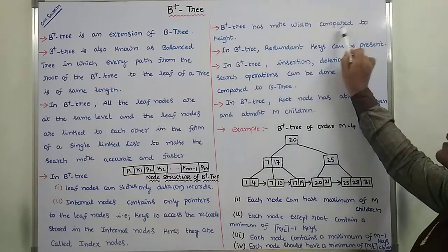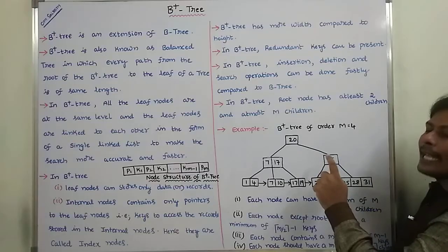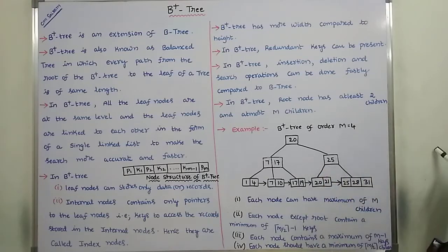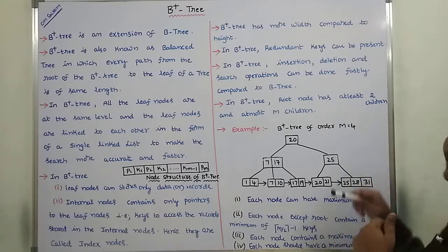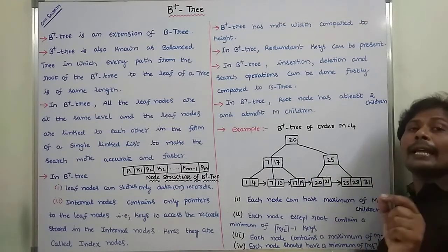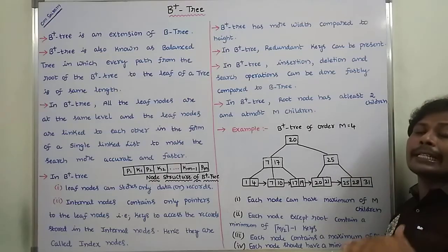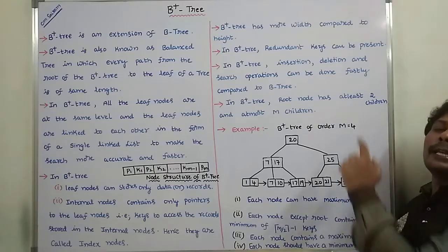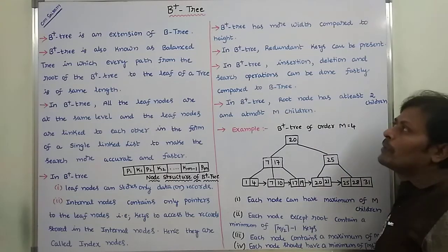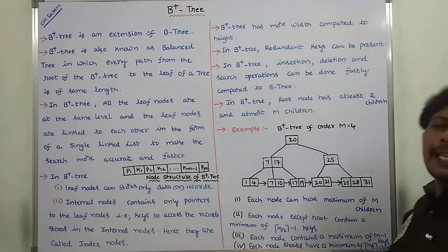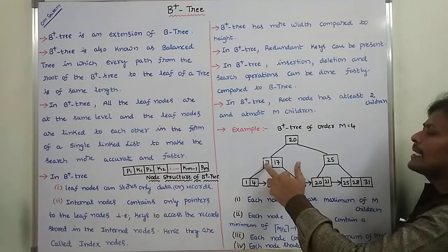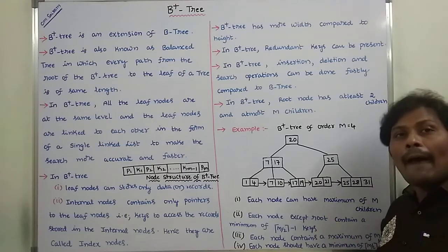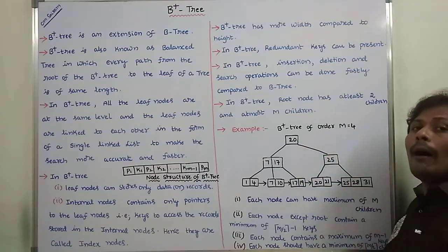In B plus tree, there is more width compared to height. Whenever we perform insertion operations, width is increased compared to height — height is reduced and width increases. But in B tree, height is increased and width is decreased. In B plus tree, redundant keys can be present. The keys 7, 17, 20, and 25 in the internal nodes are redundant keys that point to the corresponding data elements at the leaf nodes.